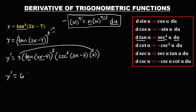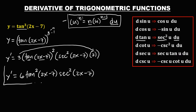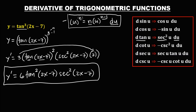Then we have tangent — we need to put the exponent on tangent — so tangent squared(2x minus 7), times secant squared(2x minus 7). This is now the derivative: 6 tan²(2x−7)·sec²(2x−7).